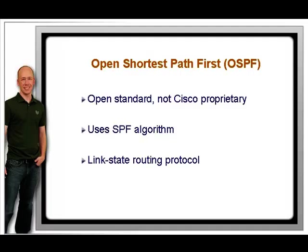After its neighbor routers are discovered, they begin to exchange information about network links it knows about, using messages called link-state advertisements, LSAs. After exchanging all routes, the routers send out updates only when there is a change, and they send information only for that affected route, not the entire routing table. Routers take the link-state advertisements heard from other routers and place those routes in its link-state database. Routers then run the SPF algorithm to determine the best route to a destination and place that route in the routing table.